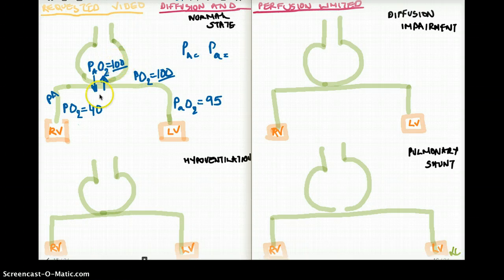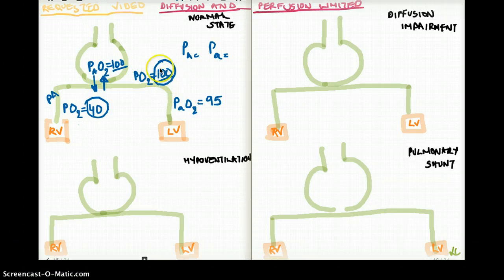So that's why this 40 is going to be 100, because the alveolar oxygen is 100. So the capillary in the alveolus, passing through the alveolus is also going to be 100.